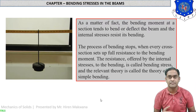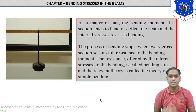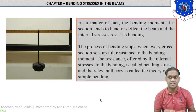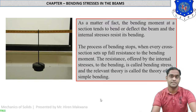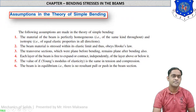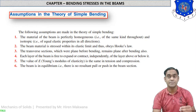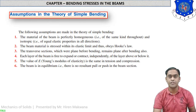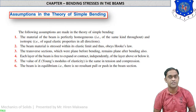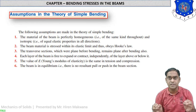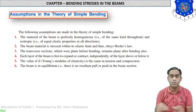Let us study the assumptions of the beam in the theory of pure bending — meaning the beam is assumed to contain certain properties. There are a total of six assumptions made during the theory of bending. The first one is that the material of the beam is perfectly homogeneous, of the same kind throughout, and isotropic — meaning equal elastic properties in all directions. The beam is made up of the same material throughout its length.